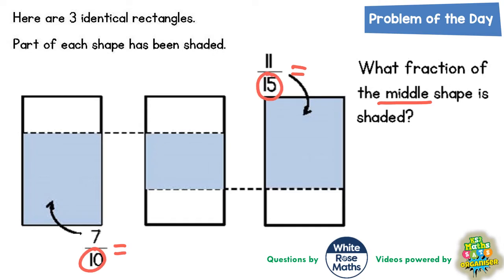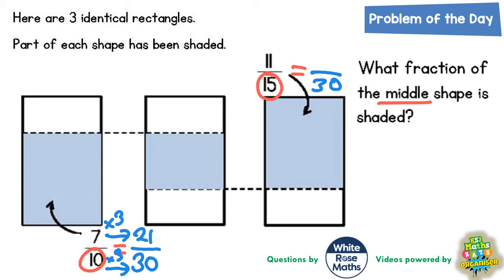If you think about your ten times table it shouldn't take you too long to figure out that ten would go into thirty, but fifteen would also go into thirty, so thirty could be used as a common denominator. To make ten into thirty we multiply by three, so we've got to make the seven three times bigger — seven times three is twenty-one. So seven tenths in thirtieths is twenty-one thirtieths.